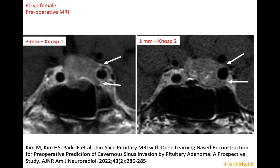To evaluate the cavernous sinus it's best to use one-millimeter images. Comparing the same patient — a 60-year-old female — on three-millimeter versus one-millimeter images at the same level, on the three-millimeter images you would say the extension is less than 180 degrees surrounding the carotid artery, whereas on the one-millimeter images you would say it's between 180 and 270 degrees.